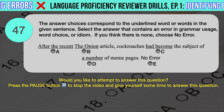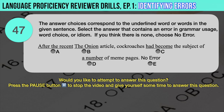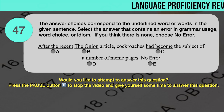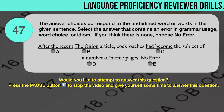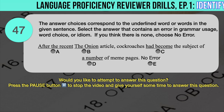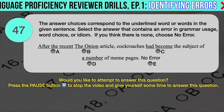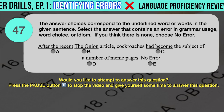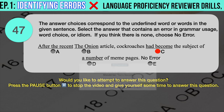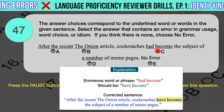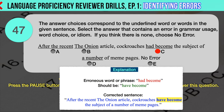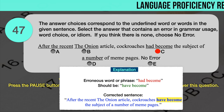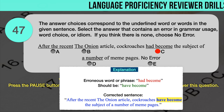Drill question number 47. 'After the recent The Onion article, cockroaches had become the subject of a number of mean pages.' The underlined words are: A. After the recent, B. The Onion, C. Had become, D. A number. The correct answer is C. 'Had become' should have been 'have become.' The time marker 'recent' suggests that the verb should be in the present perfect tense, so 'had become' should be changed to 'have become.' Correct sentence: After the recent The Onion article, cockroaches have become the subject of a number of mean pages.